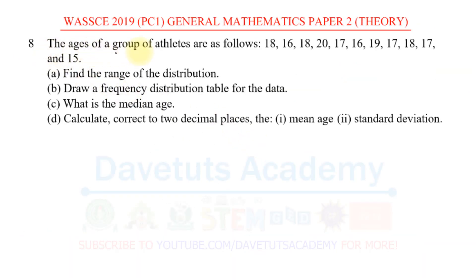The ages of a group of athletes are given, and we are to answer a set of questions based on those ages. We are to find: (A) the range of the distribution, (B) draw a frequency distribution table for the data, (C) find the median age, and (D) calculate correct to two decimal places the mean age and standard deviation.